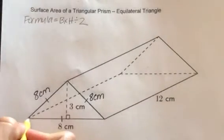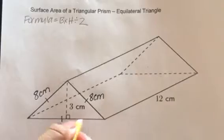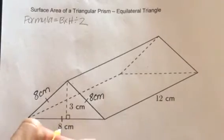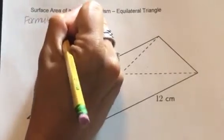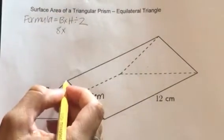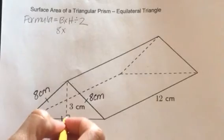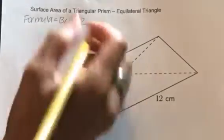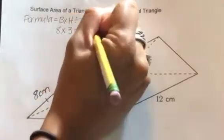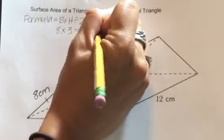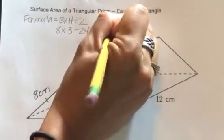So as we can see, the base is going to be 8, and the base is always the bottom. So we're going to say that's 8 times the height. Remember, the height is how tall the equilateral triangle is, and it is 3 centimeters. So we're going to do 8 times 3, which is 24. We're going to then divide that by 2, so that equals 12.